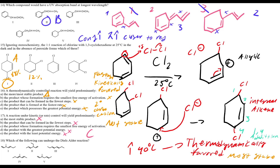Question 18: which of the following can undergo a Diels-Alder reaction? The diene must be conjugated and in a cis conformation. Numbers 1 and 2 are not conjugated. Number 3 is conjugated and can be twisted to a cis conformation by rotating around the single bond. Number 4 is also conjugated and can be twisted to cis. Number 5 is isolated. So C and D (numbers 3 and 4) are the correct answer choices.